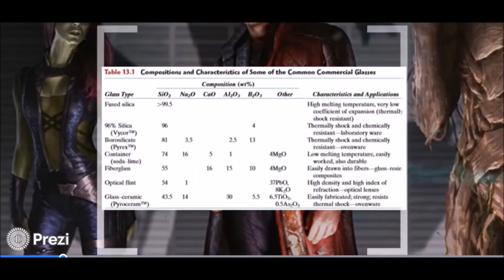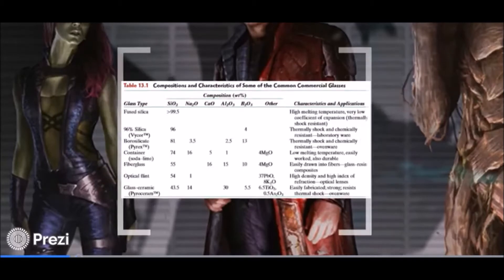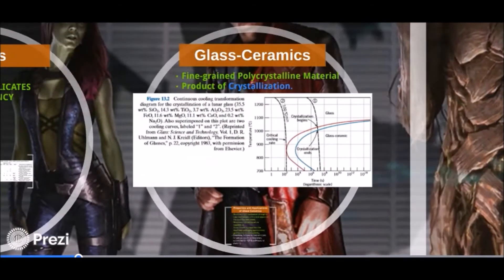Here is a table about the contents of commercial glasses. For instance, fused silica has more than 99.5% silicon oxide content. Now let's go to glass ceramics.